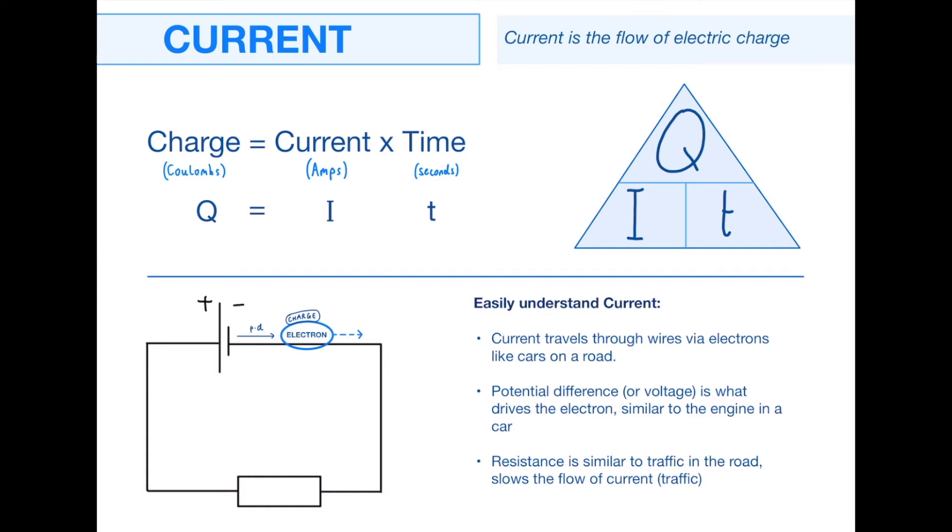Remember, with these equations, if ever you have something that isn't those standard units, remember to convert them. So minutes, convert them into seconds, that kind of stuff. Something I've always taught my students with current is an easy way to understand it and how charge and current travels through a circuit. Current travels through wires or a circuit via electrons, just like cars carry people on a road. Imagine your circuit and your wires are like the roads. The electrons are cars, and charge is effectively like people in the car. Potential difference or voltage is what drives the electron and pushes it through the circuit, just like an engine within that car. Resistance just means that all those electrons have to funnel through a smaller space, just like traffic on a road. By remembering it in the form of traffic and cars, which is something we're all familiar with in the real world, it makes it much easier to understand what's actually going on.